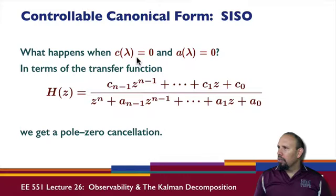So what happens when c(lambda) is equal to zero and a(lambda) is equal to zero? This is a pole and this is a zero. In terms of the transfer function, we get a pole-zero cancellation.